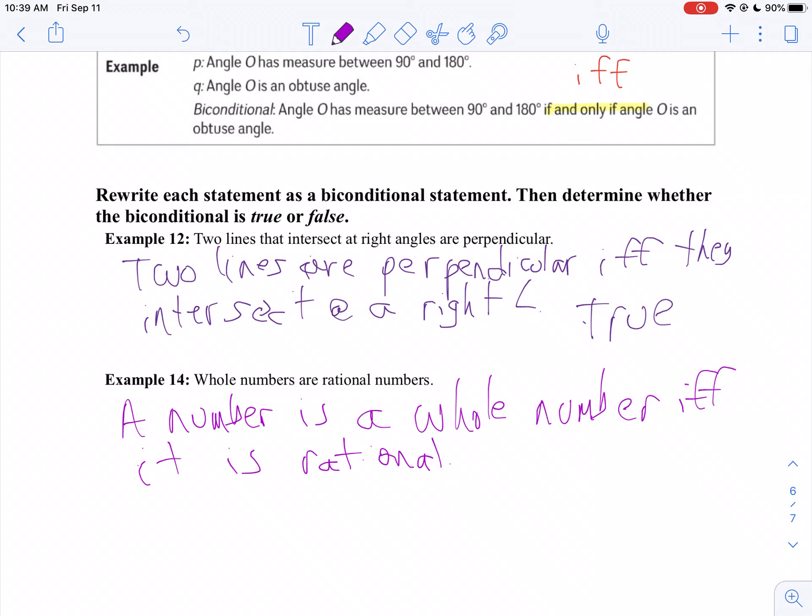If a number is a whole number, must it be rational? Yes, it must. Because whole numbers are inside. Whole numbers, remember, are just your counting numbers and zero. Zero, one, two, three, four, five.